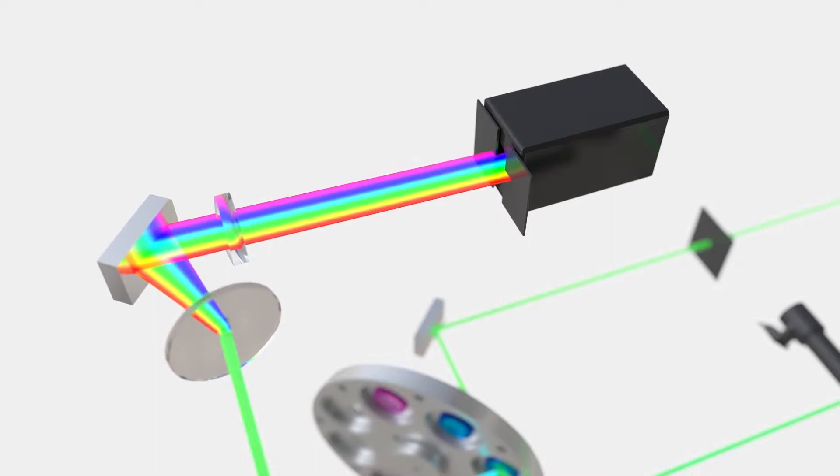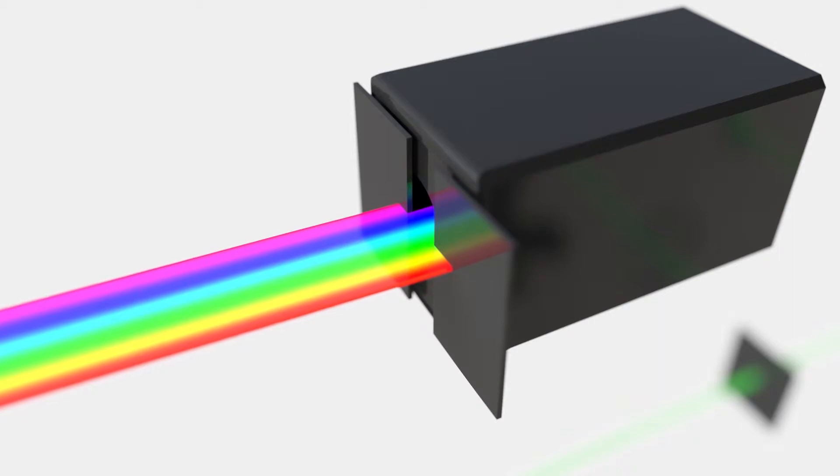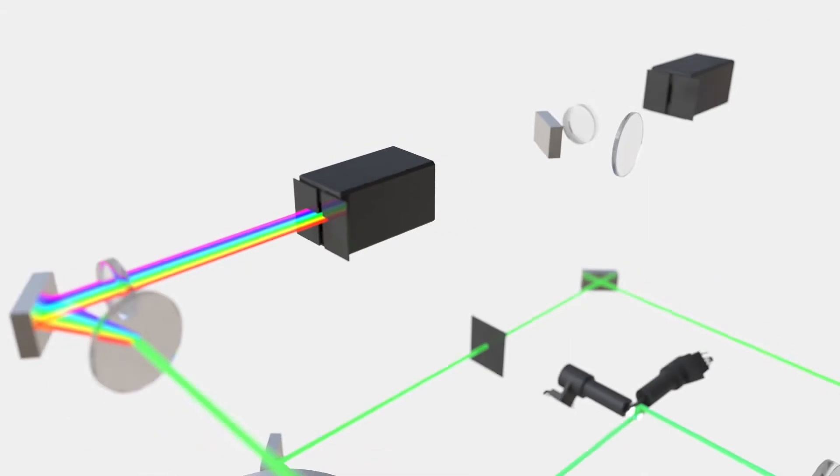A motorized adjustable slit in front of the TrueSpectral detector creates bandwidths from 1 nanometer up to 100 nanometers, giving users maximum control over the light they collect.